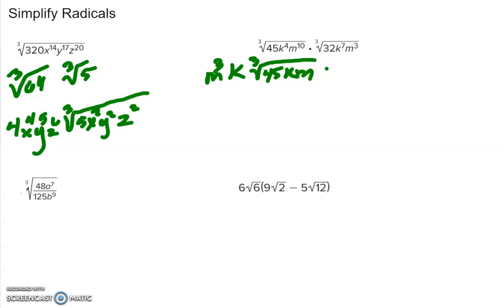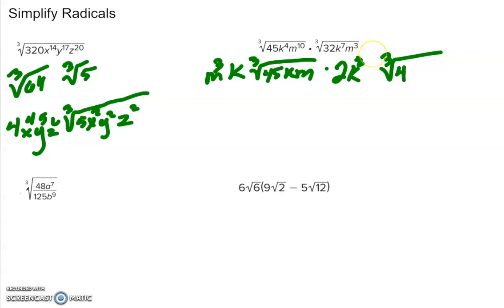Now multiplying by the cube root of 32: the cubic number I can divide in is 8, and the cube root of 8 is 2, so I put 2 on the outside. 8 times 4 is 32, so I have the cube root of 4 on the inside. For k to the 7th: how many groups of 3 in 7? That's 2, giving k squared on the outside. 3 times 2 is 6, and 7 minus 6 is 1, so 1k remains inside. For the cube root of m cubed: the cube root undoes a base raised to the third power, so I just have m on the outside.